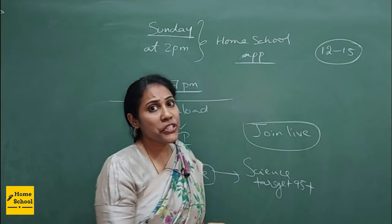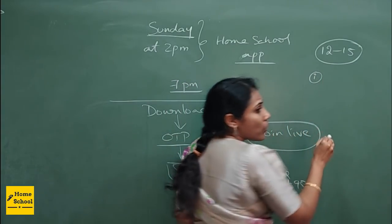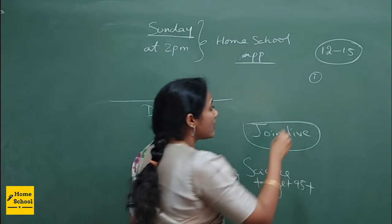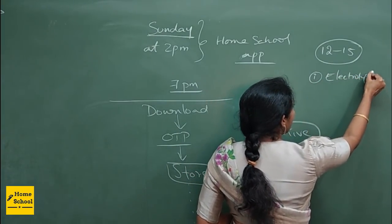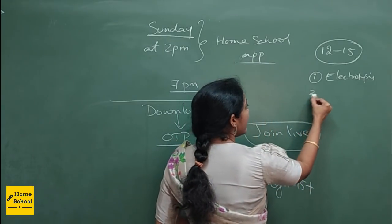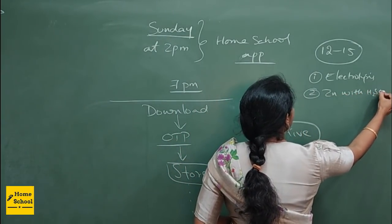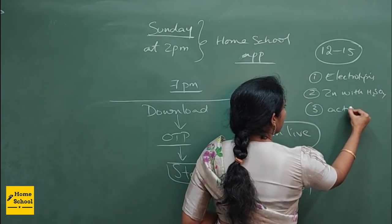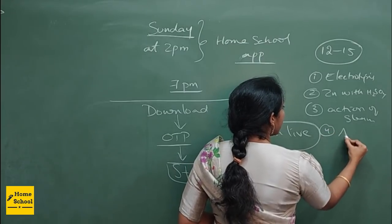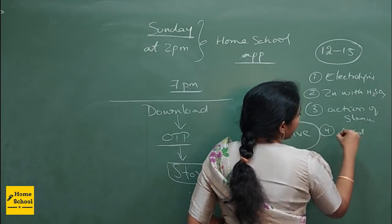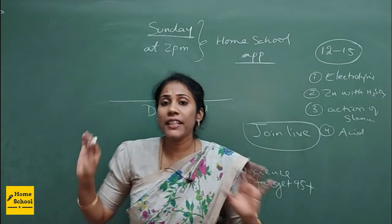Coming to chemistry chapters — you have the diagram of electrolysis of water from chemical reactions and equations, which is very important. Second is zinc with sulfuric acid diagram. Third is action of steam on metals. Fourth is acid solution conducting electricity. These are the four diagrams you should definitely focus on — one diagram may come for three marks.